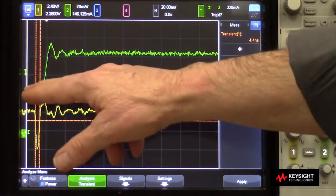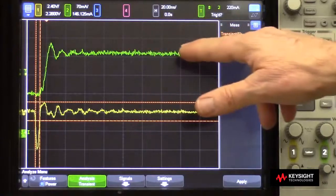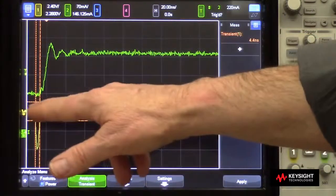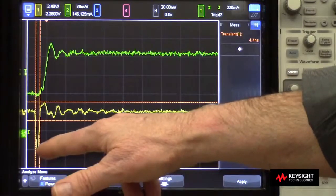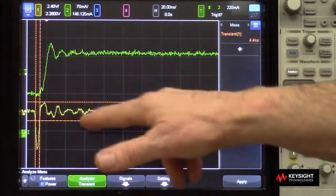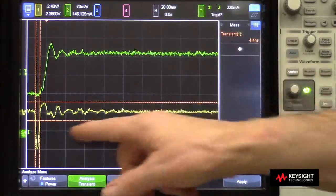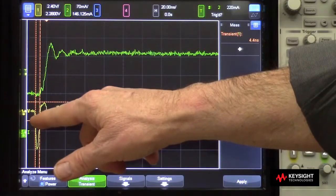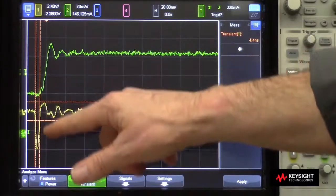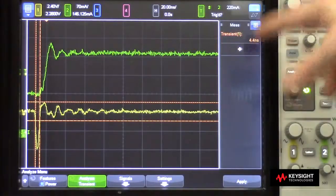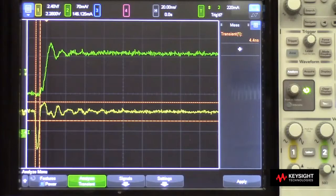My load went from a low current level to a high current level. My voltage, 12 volts voltage level, took an immediate dip when it saw the higher load, then settled back in. And then the scope automatically measured the time from when the voltage went outside of the 10% measurement band until the last time it came in, it measures 4.4 nanoseconds.